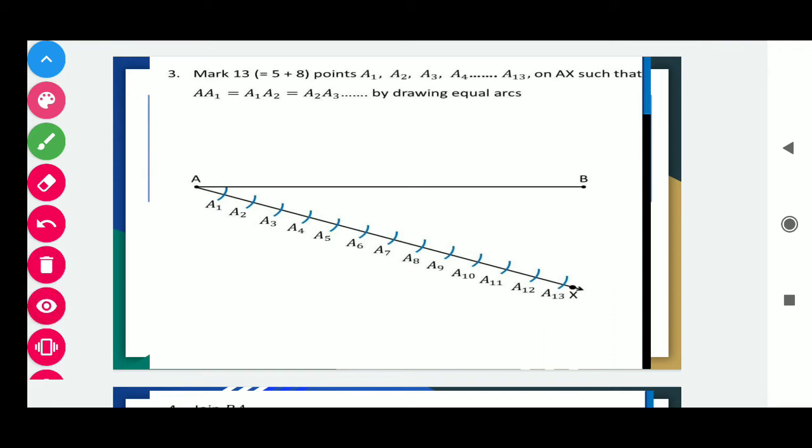On AX such that A A1 equals A1 A2 equals A2 A3 by drawing equal arcs. Students, for this you have to keep the compass on point A, and open it as small as you can. Keep it minimally open.